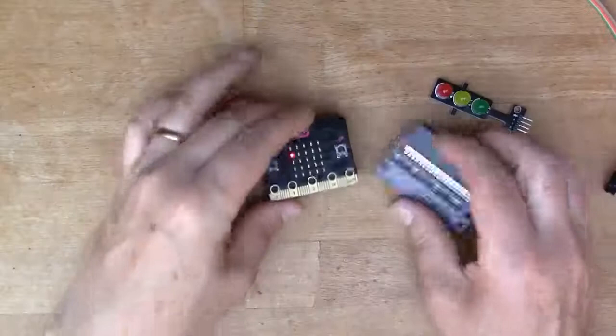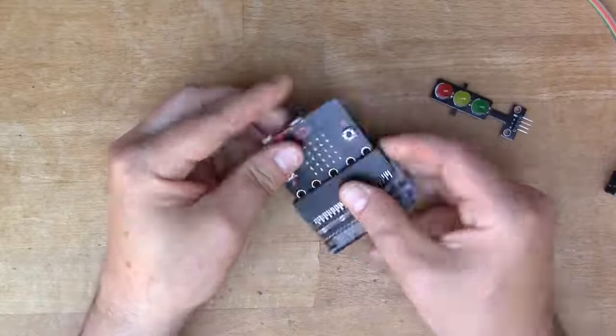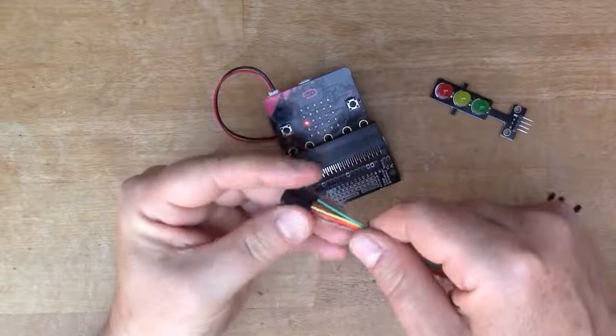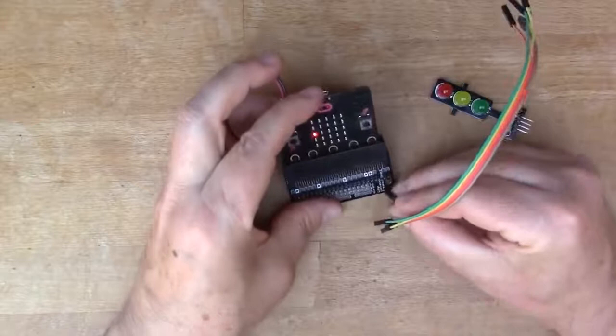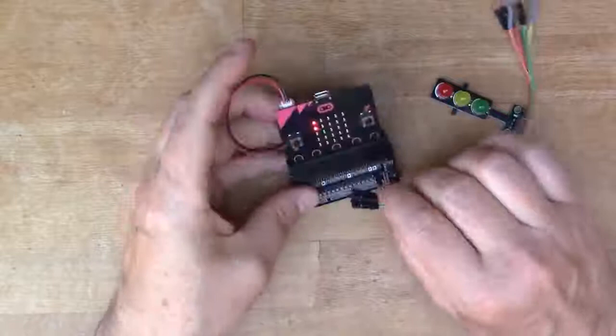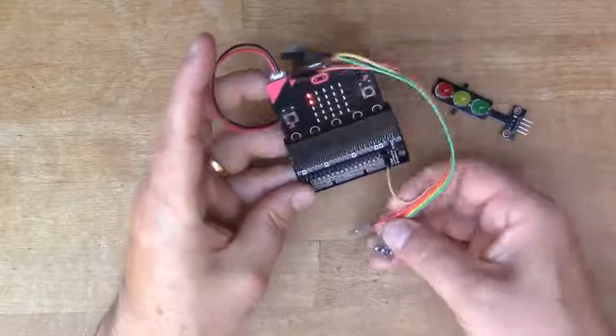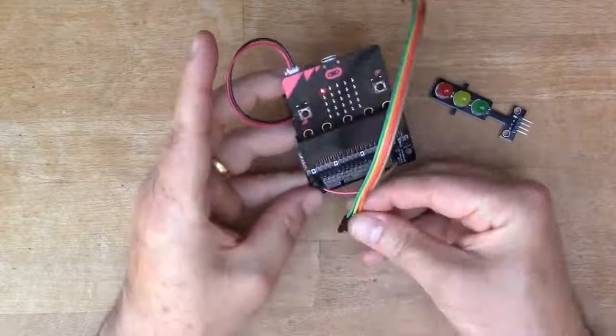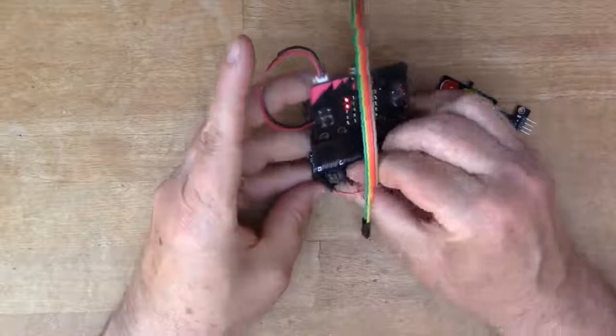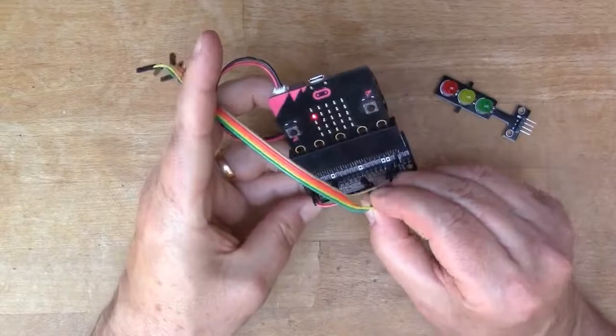Now we can connect it up to the new traffic lights. I use this extender board so I can access the pins easily. We'll connect up this DuPont cable. I've got ground, and I think it was red to zero, well we'll find out. Red to zero, amber to one, and green to pin two to connect up the traffic lights.